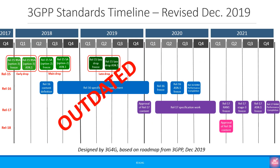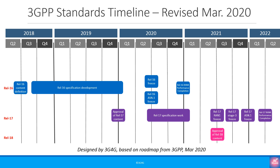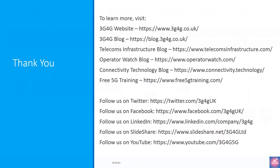The timeline we looked at for Release 16 and 17 has just been revised by 3GPP because of the coronavirus pandemic. Release 16 will be ready in June but Release 17 will only be ready in late 2021. So this was in short the 3GPP roadmap and the release timeline. In the next part we will look at 5G spectrum.